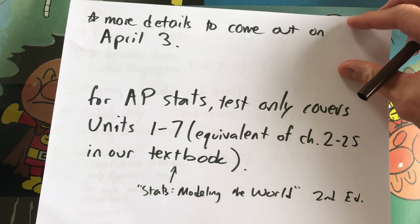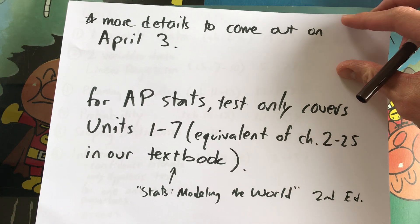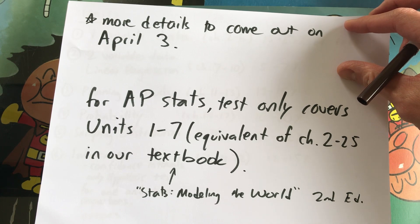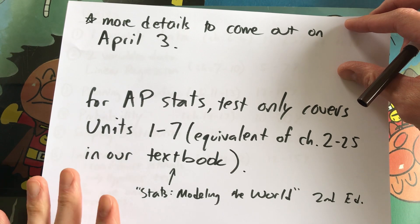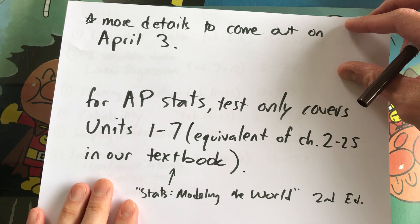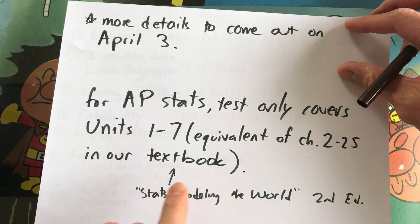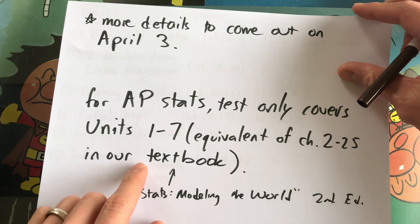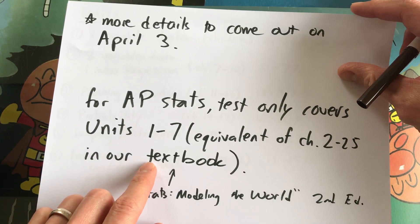For the AP tests, they're cutting out two units from every AP exam — the amount of material covered is going to be decreased. For AP Stats specifically, we're going to be dropping two chapters — units 8 and 9 — and I'll show you that in a second.